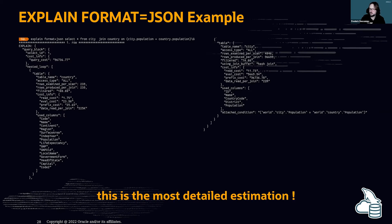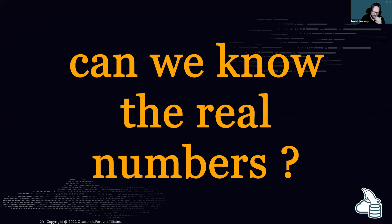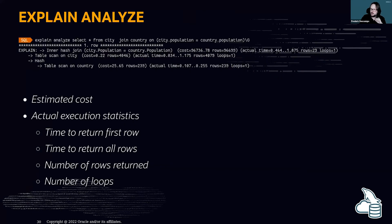To get real numbers in MySQL 8, you can use EXPLAIN ANALYZE. The output is the same as EXPLAIN FORMAT=TREE, but instead of only estimated costs, you also get actual execution statistics: time to return the first row, time to return all rows, number of rows returned, and number of loops. These are actual times, not estimates, so you can compare estimated versus actual.